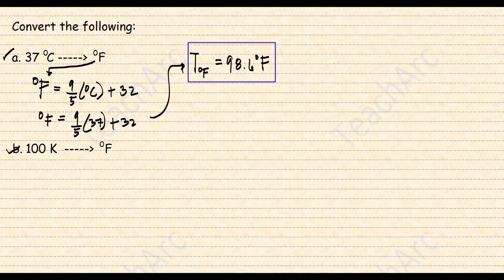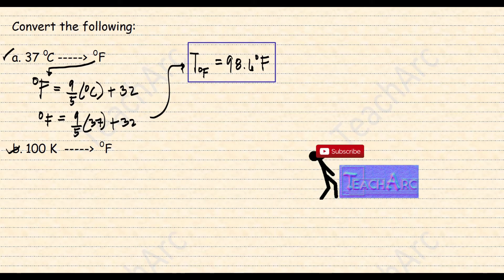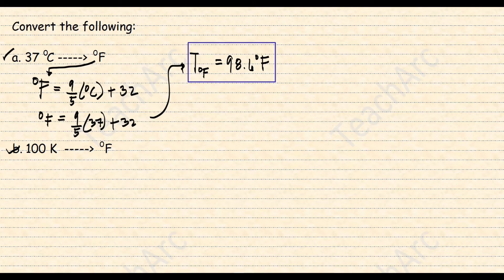How about the second one? Convert 100 Kelvin to degrees Fahrenheit. You can actually derive a formula to convert Kelvin to Fahrenheit using the derivation method I have shown you. But for this example, we'll just convert Kelvin to Celsius first and Celsius to Fahrenheit. Kelvin is equal to degrees Celsius plus 273.15.